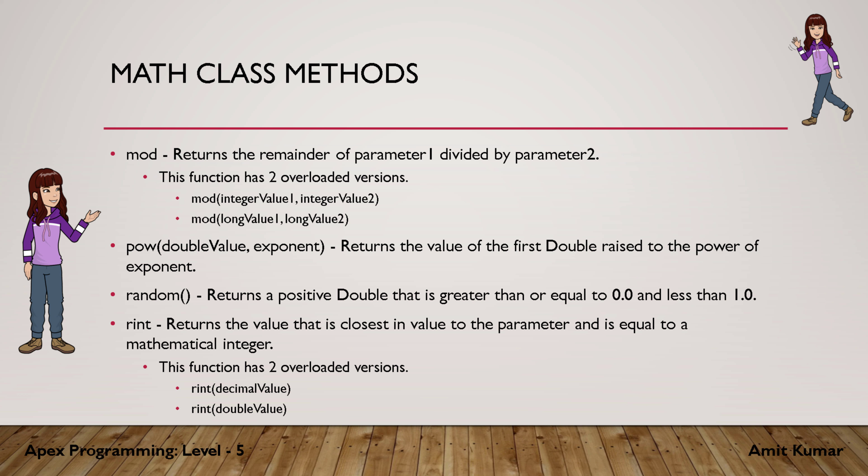rint returns the value that is closest in value to the parameter and is equal to a mathematical integer. We can pass a decimal value or a double value to it, and it returns the closest integer value of the passed parameter.